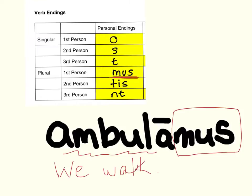First thing you do is isolate that ending — that tells us who the subject is. If you wanted to state that subject in Latin, it would be nos ambulamus, we walk. The nos is optional, but sometimes it helps, especially when you're learning these endings, to see the pronoun stated.